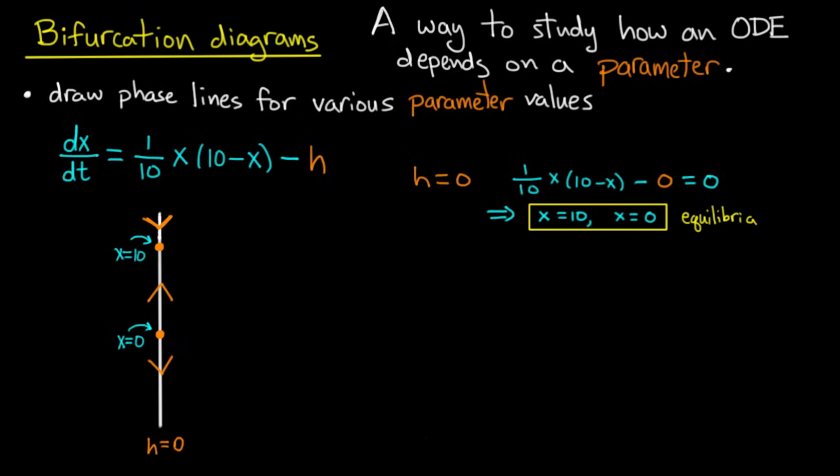How about the phase line for h equals 1? So I did h equals 0 right here, so I'll move over one unit and I'll do h equals 1 right here. Now it looks roughly the same, except the two equilibria have moved in a little bit more.